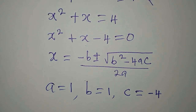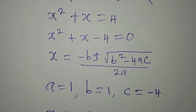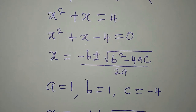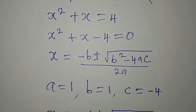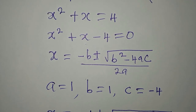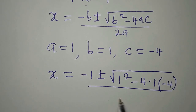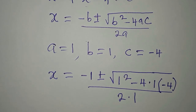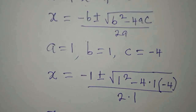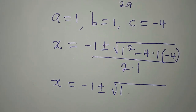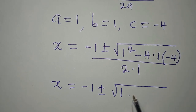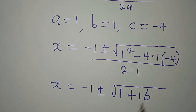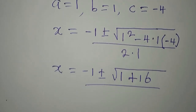Now let's put this back into the equation. We have x equal to minus b, that is minus 1, plus or minus square root of 1 squared minus 4 times a, which is 1, times c, which is minus 4, and we divide by 2 times a, which is 1. So x is equal to minus 1 plus or minus square root of 1 squared, which is 1, minus 4 times 1 times minus 4, which gives us plus 16, because negative times negative is positive, and 4 times 1 times 4 is 16. And we divide this by 2.